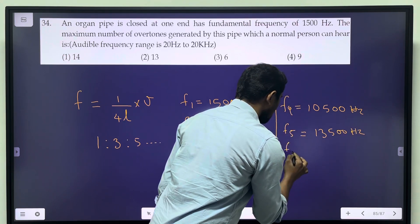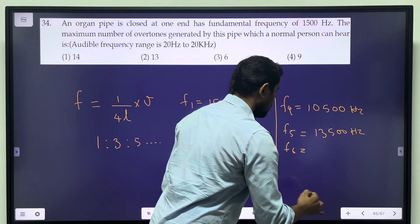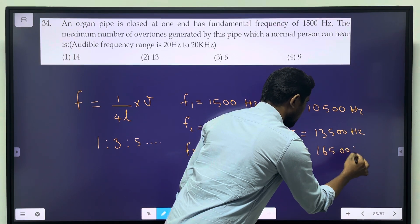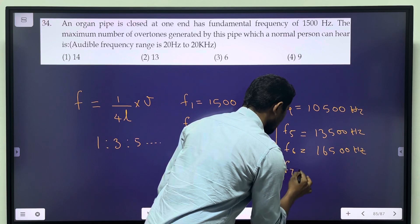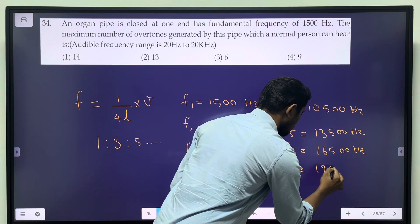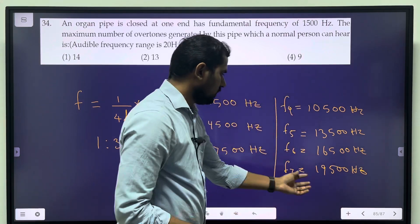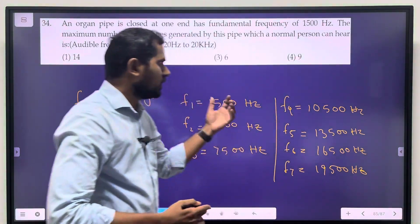f7 is equal to 1500. If we multiply, the 7th harmonic crosses 20,000.